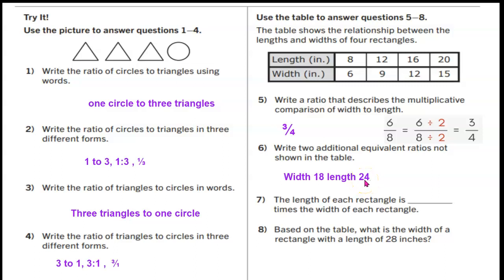Number seven, the length of each rectangle is blank times the width of each rectangle. This will be a fraction. Pause the video and figure out what fraction that will be. The length of each rectangle is 4 thirds times the width of each rectangle.